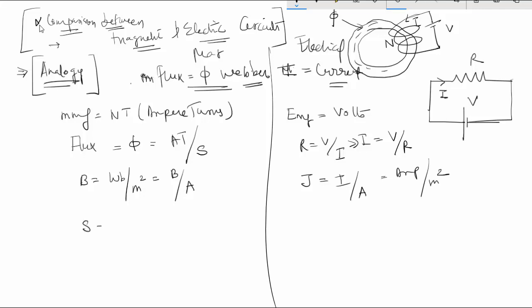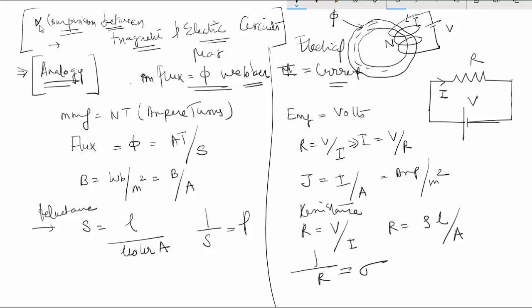And the reluctance S of the magnetic circuit can be given by L upon mu not mu R A, and the resistance is given by V by I or it is also given by R is equal to rho L by A. The inverse of reluctance is known as permeance and the inverse of resistance is known as conductance.